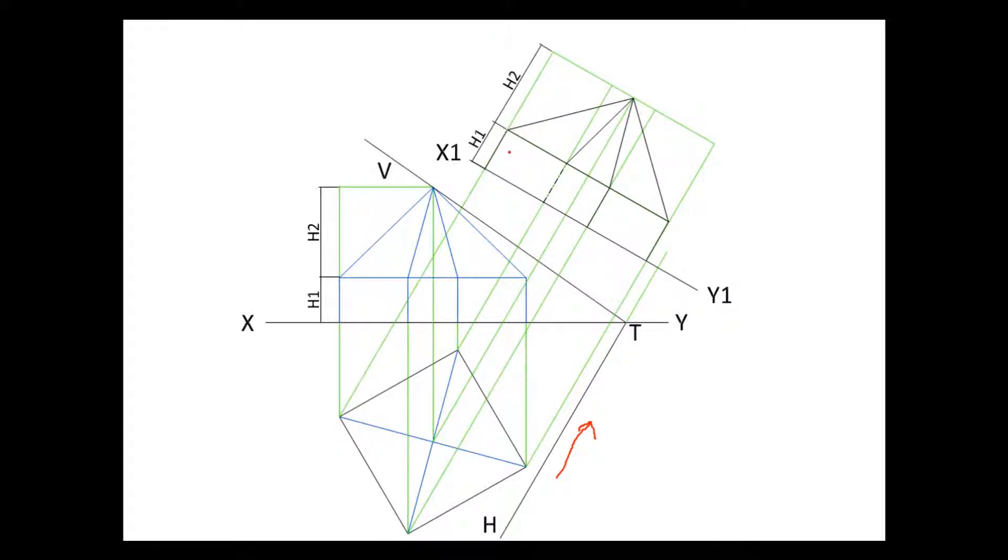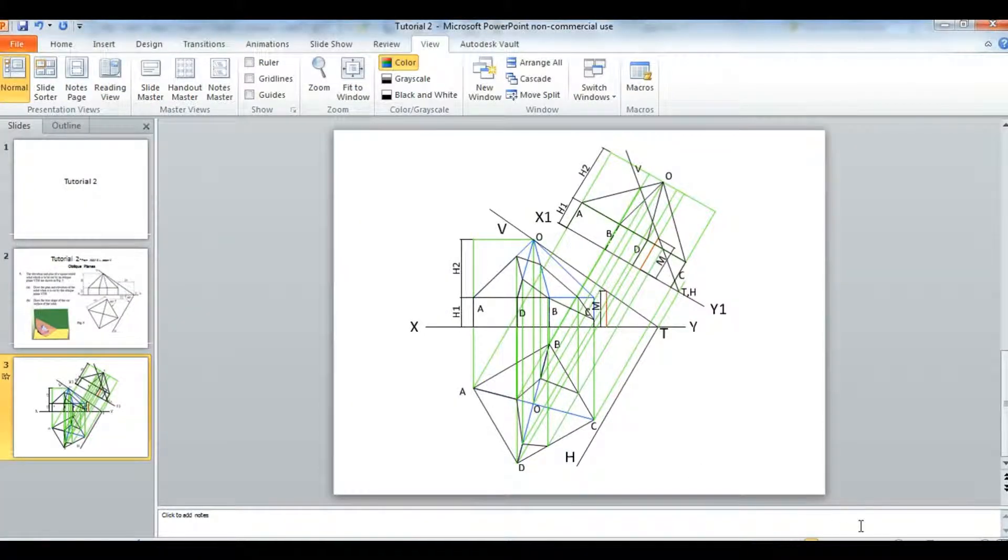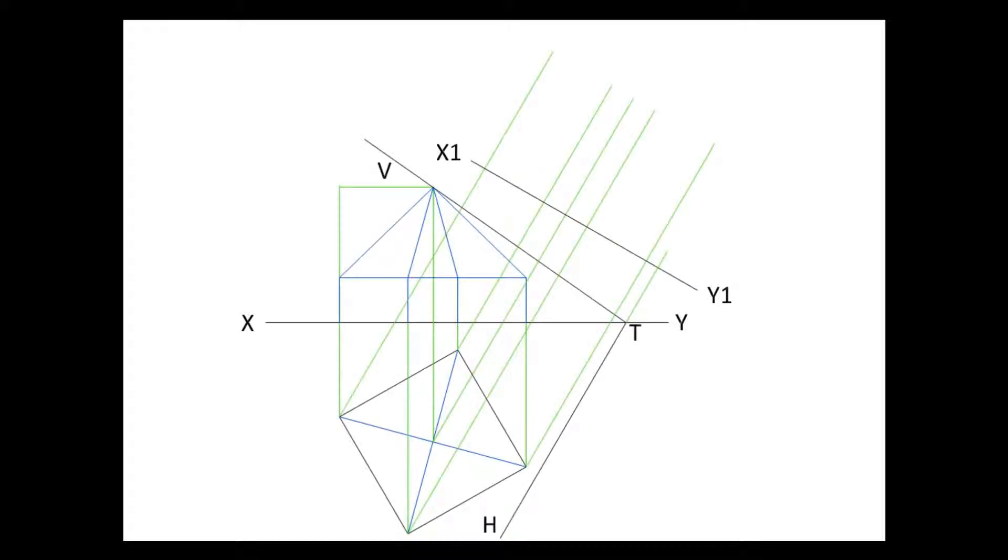Now the next thing we want to do is get this plane drawn in. Where the line my mouse pointer is moving along now is your XY line in your auxiliary view. There's a method for doing this that you just have to learn off. What you do is you take any point from your XY line. Right where my mouse pointer is, I'm taking that height.